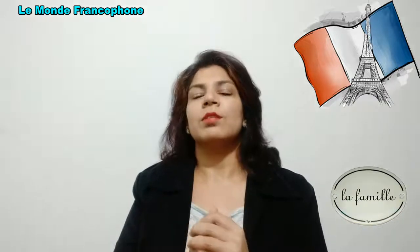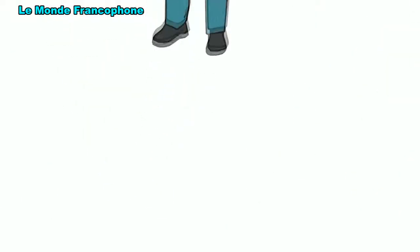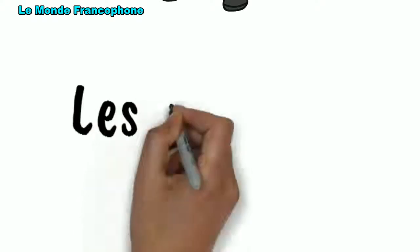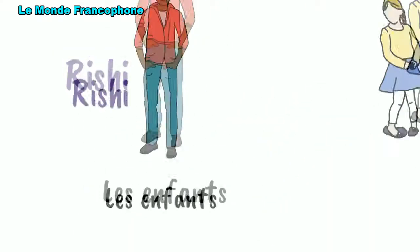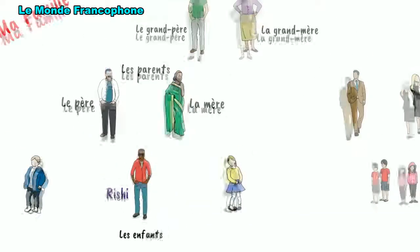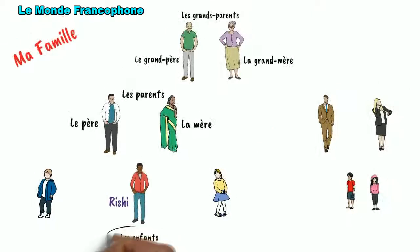The next level in this family tree is the children — that is Rishi, his brother and his sister. So these three children in the family will be called les enfants. Les enfants means children. And one child is called un enfant.